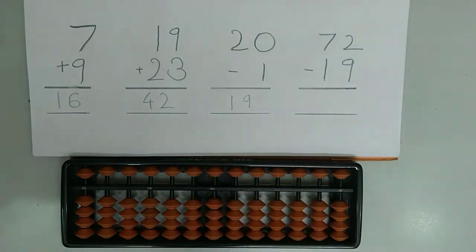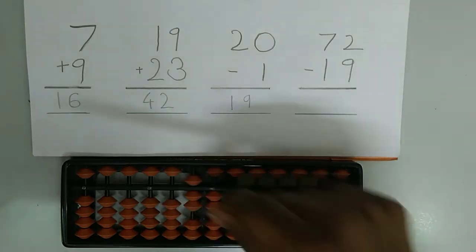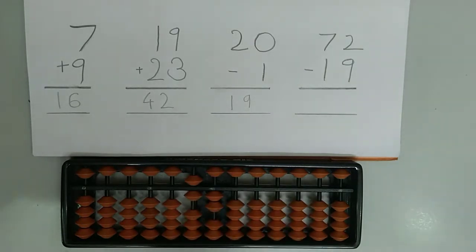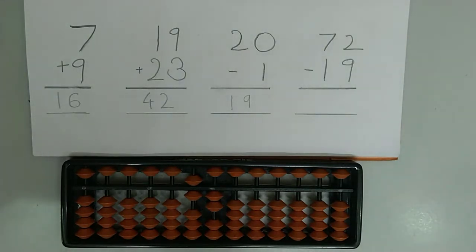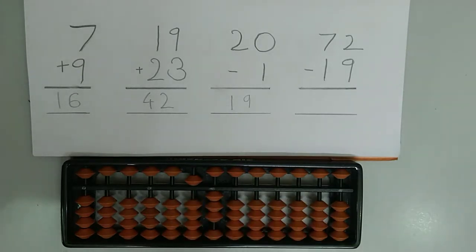Now let's try a 2-digit example: 72 minus 19. First we have to represent 72 on the abacus. Now we have to subtract 19. For that, first we have to subtract 1 from the tens rod and 9 from the ones rod. Here we use the big friend concept. The friend of 9 is 1, so we add 1 because 1 is the friend, and we have to subtract 10 because 10 is the boss. The answer is 53.